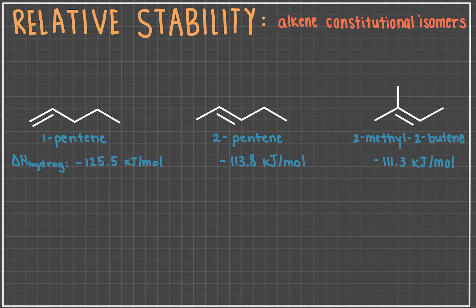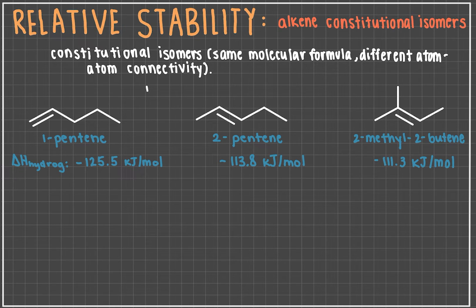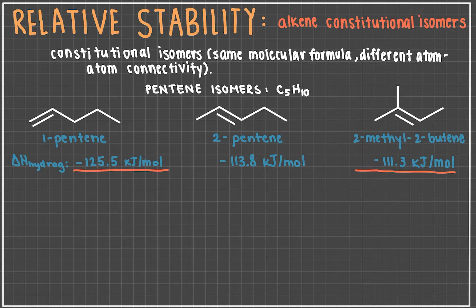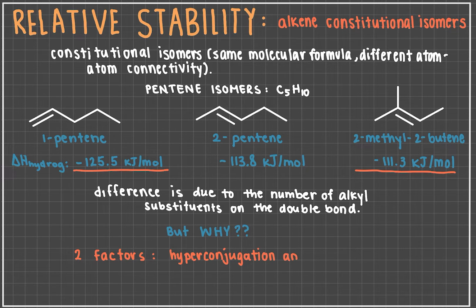Now, how do you determine if one alkene is more stable than another? Let's look at the following alkenes. One important thing to note is that these are constitutional isomers of one another, so they have the same molecular formula but different atom-to-atom connectivity. These are pentene isomers. As you can see, the enthalpy of hydrogenation is the lowest in 2-methyl-2-butene and the highest in 1-pentene. This is due to the amount of alkyl substituents located on the double bond. Fewer alkyl substituents on the double bond leads to a higher enthalpy of hydrogenation, whereas more alkyl substituents on the double bond leads to a lower enthalpy of hydrogenation, and thus a more stable pentene constitutional isomer.